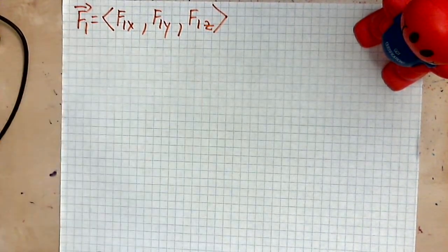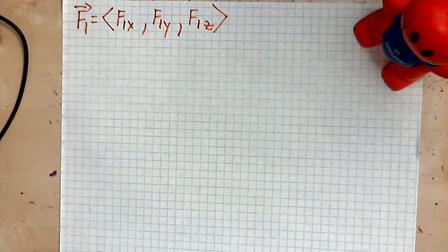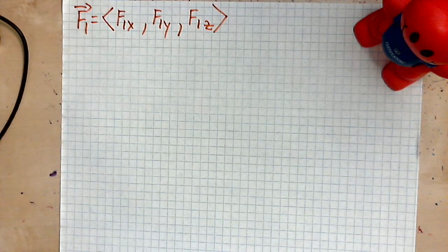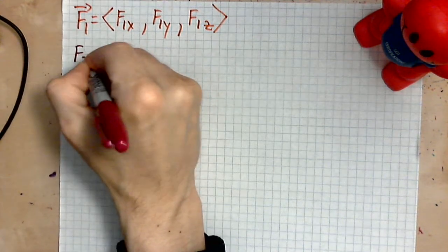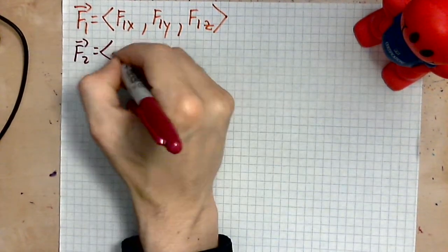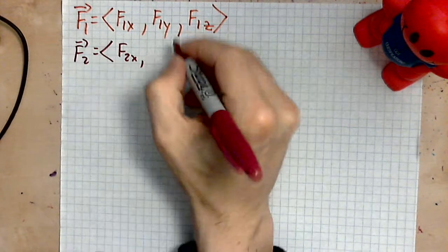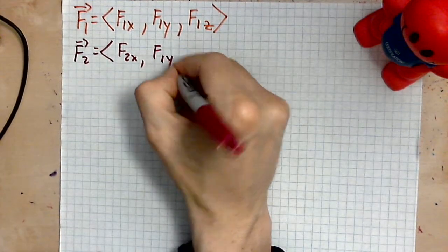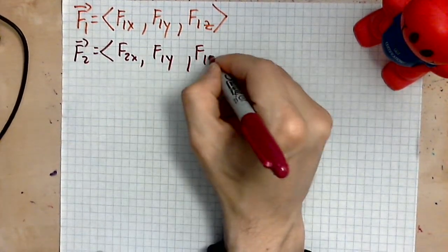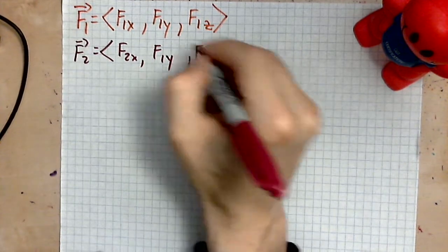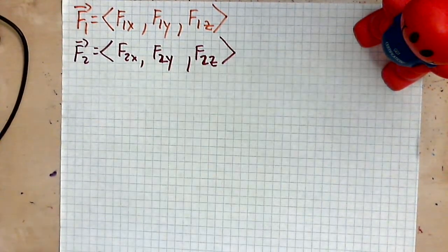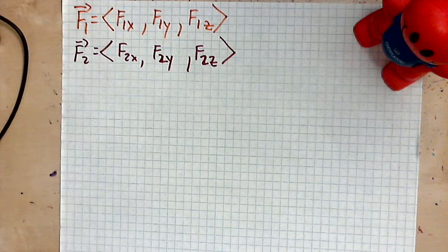And then you may be given another vector. I've got all these colors here, might as well use them. And that is given by F2, and that is given by f2x, f2y, and then f2z. No, 2, I'm sorry. There we are. So these are the components of our vectors.